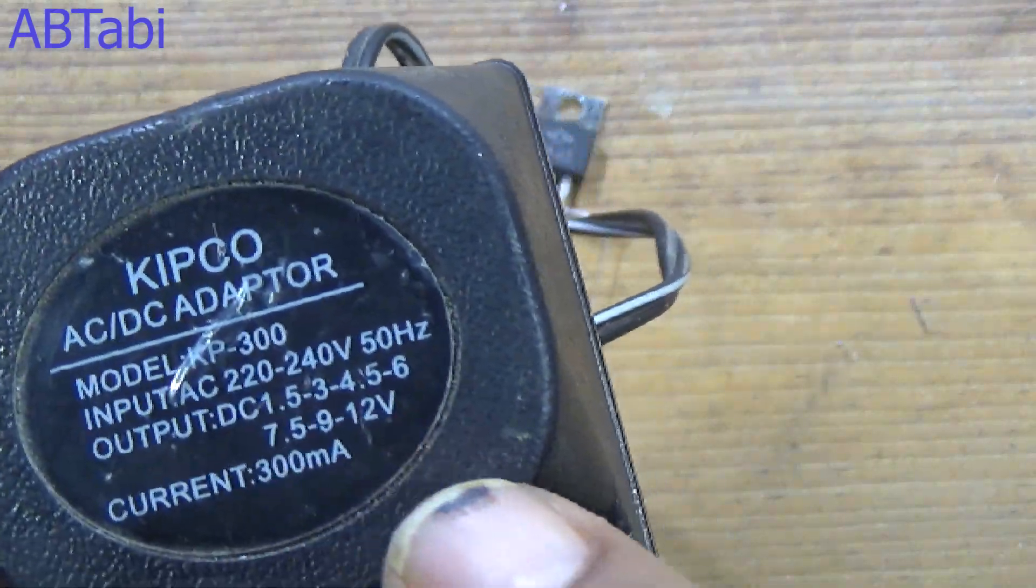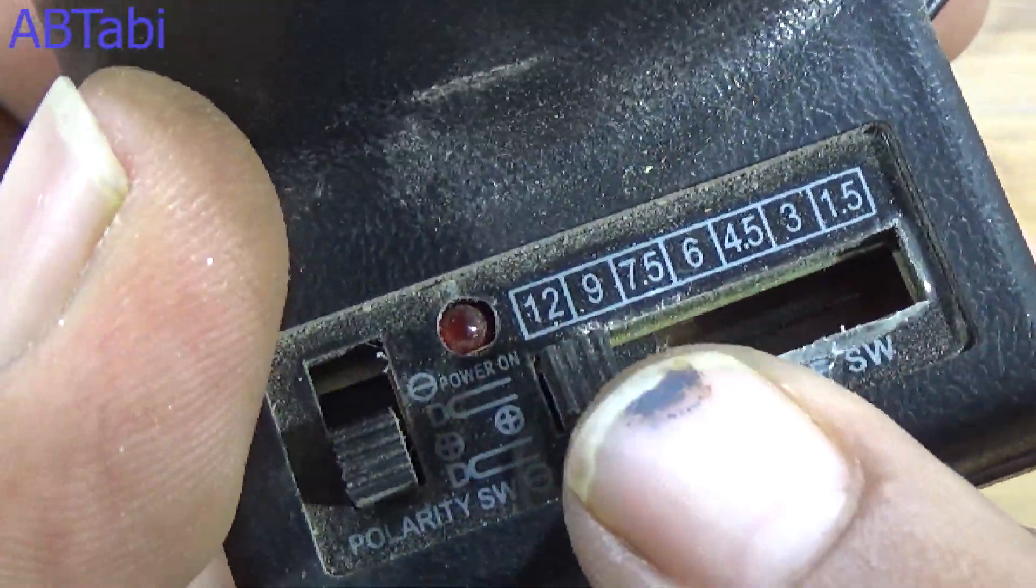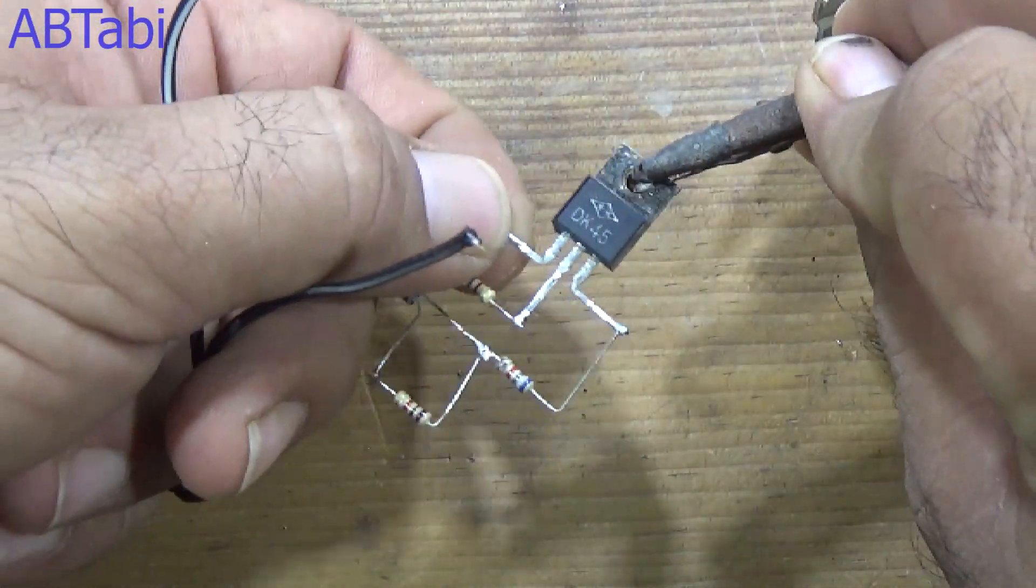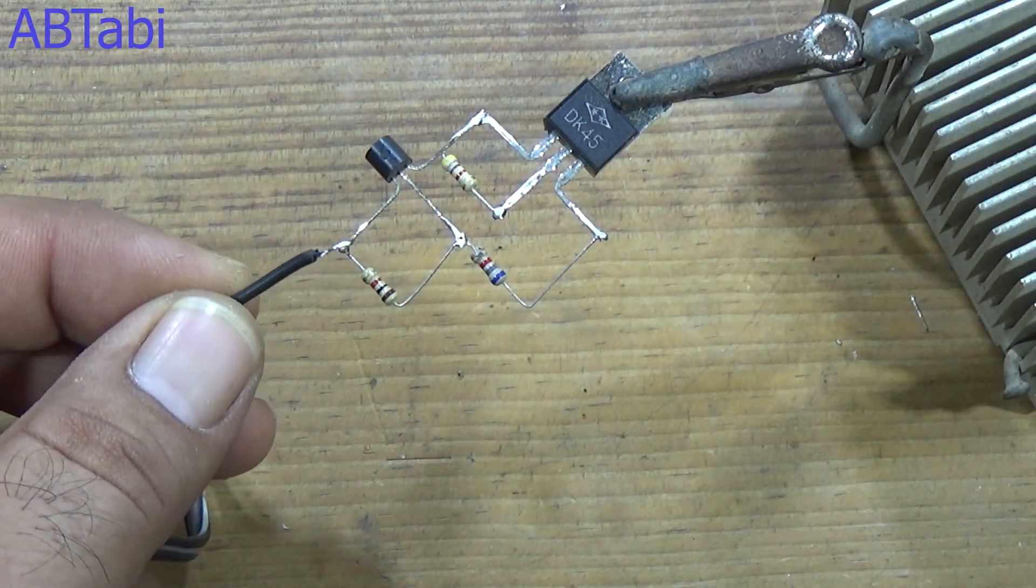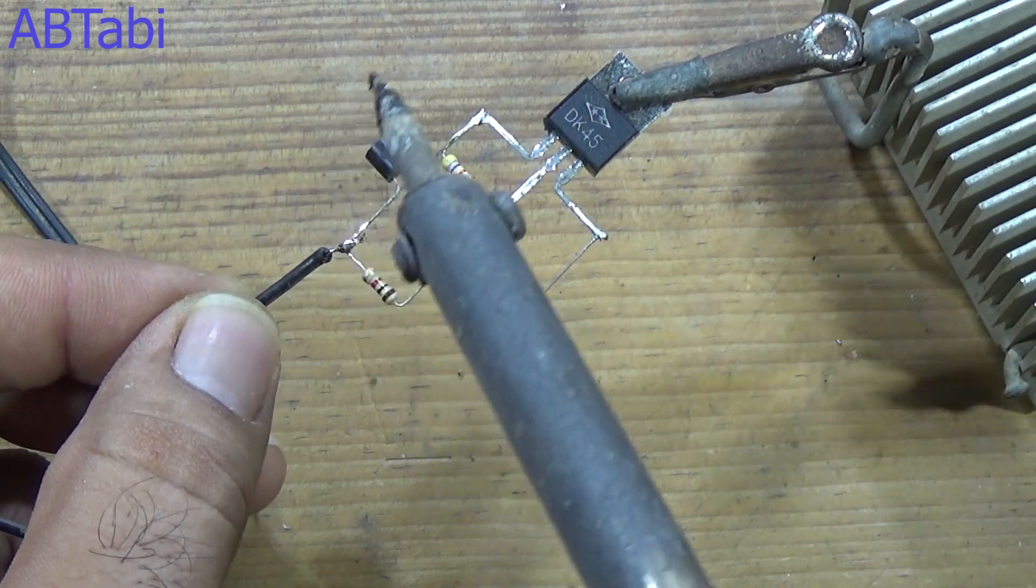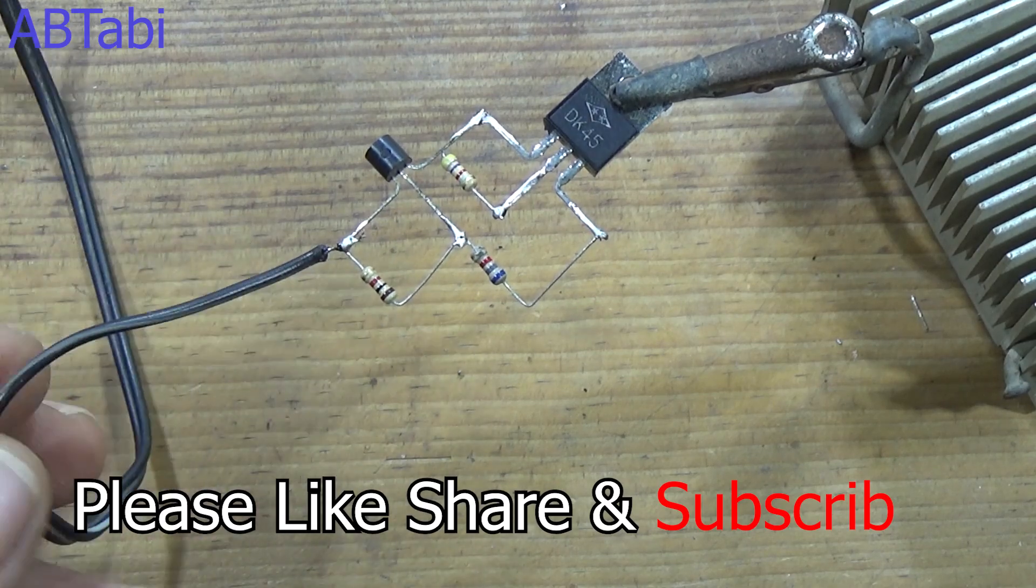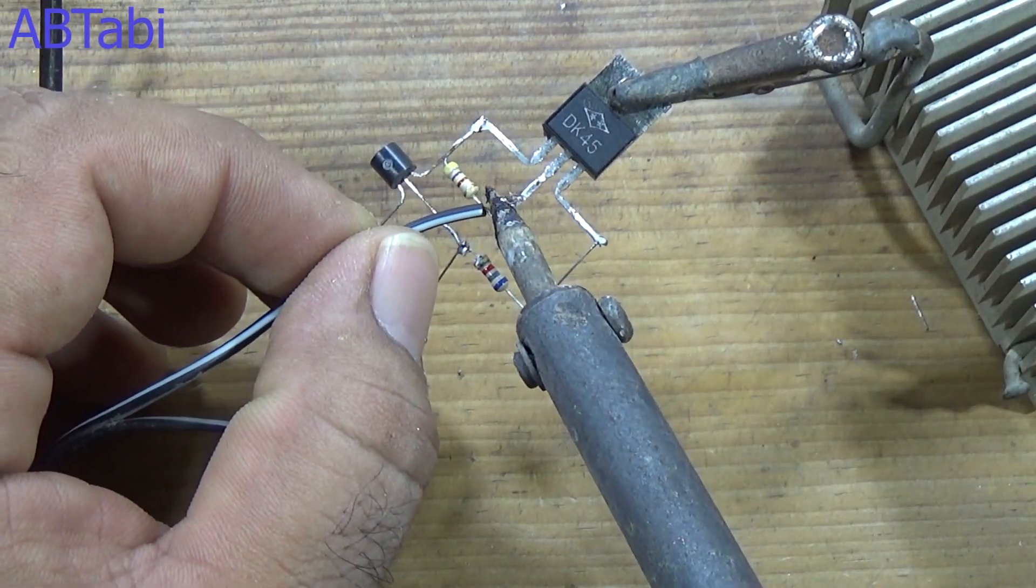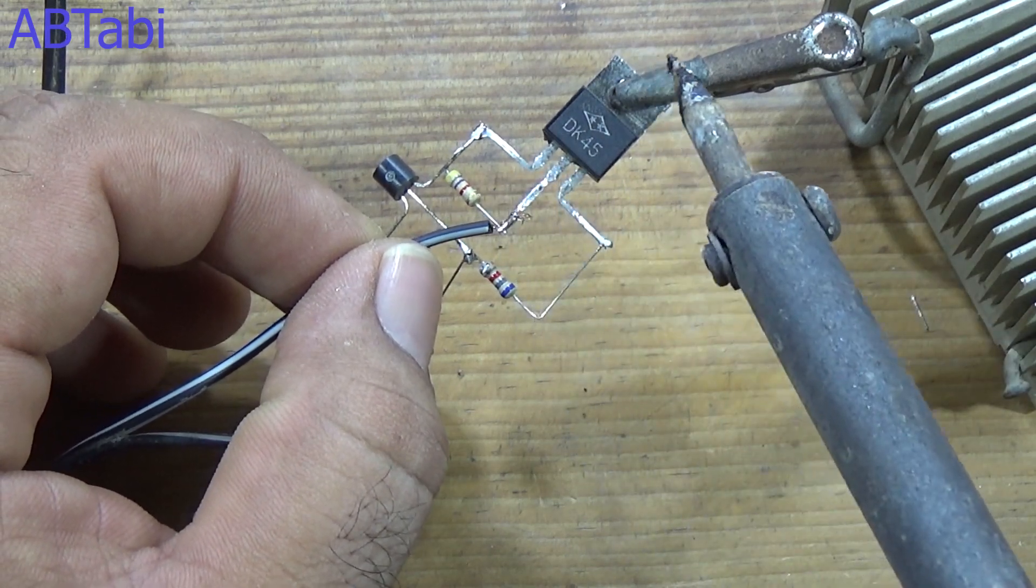I am using here an AC to DC 300mA adapter. If you want faster charging, you can use 1 or 2A AC to DC 12-15V power supply. Negative wire connects with BC547 transistor emitter pin, and supply positive wire connects with DK45 transistor collector pin.